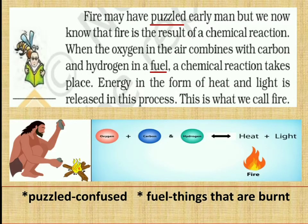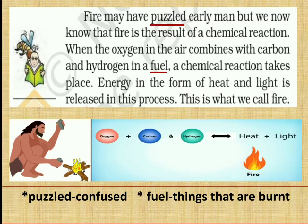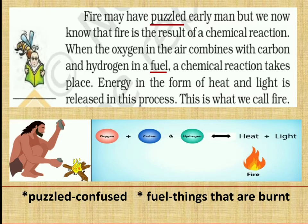Fire may have puzzled early man — puzzled means confused. But we know that fire is the result of a chemical reaction. It is a reaction which cannot be reversed. When oxygen in the air combines with carbon and hydrogen in a fuel, a chemical reaction takes place. Fuel means things that are burnt. Energy in the form of heat and light is released in this process. This is what we call fire.